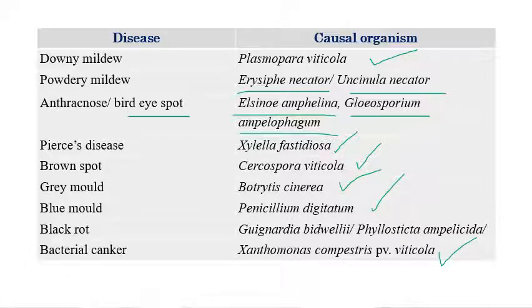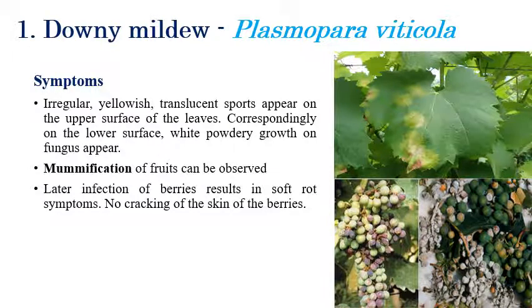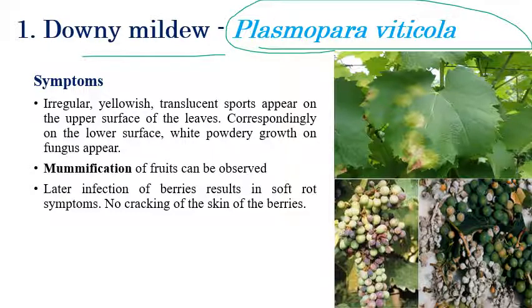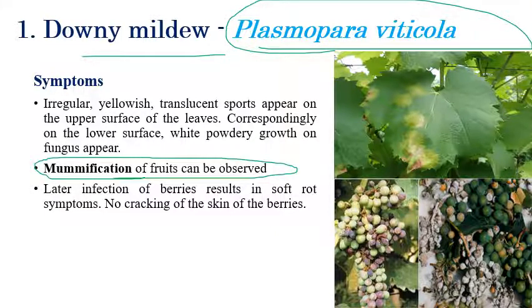Now we will see each disease in detail. The first is downy mildew, caused by Plasmopara viticola. The most important and characteristic symptom is mummification of fruits. We can see here mummification of fruits. Fruits are mummified into small, shriveled forms, along with irregular white translucent spots or downy growth on the upper surface of leaves.